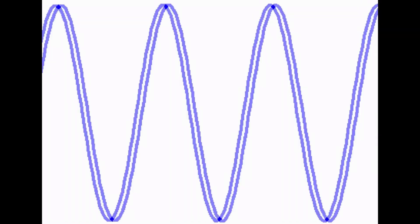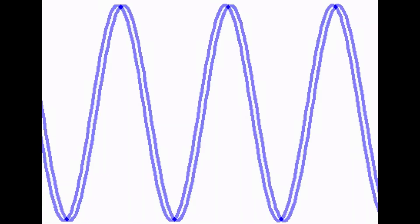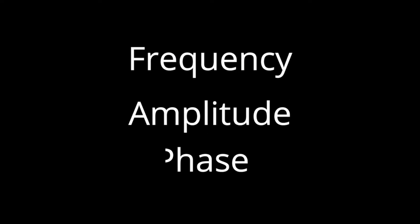Generally, when we describe a signal we talk about its three important characteristics: frequency, amplitude and phase.